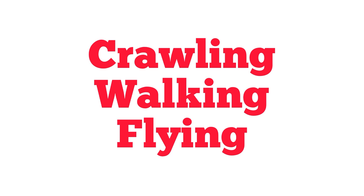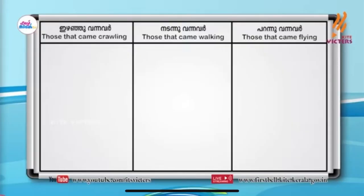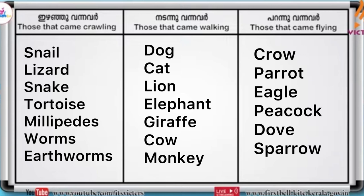Some animals move by walking or jumping. Some animals can move by flying. So animals' movements are in different ways — some use crawling, some are walking, some animals are flying, and some animals are swimming. These are the different ways of animal movements.